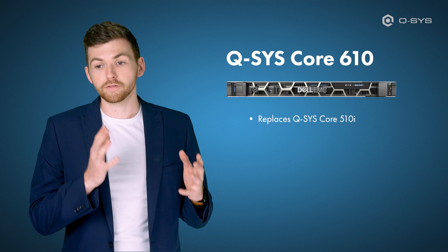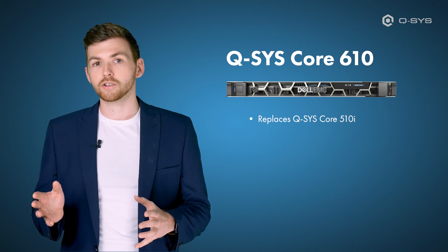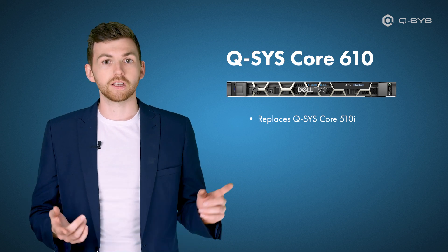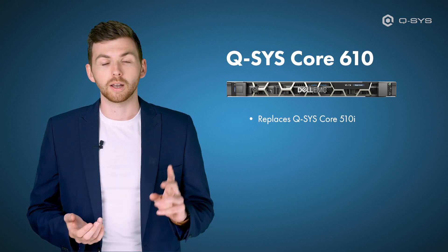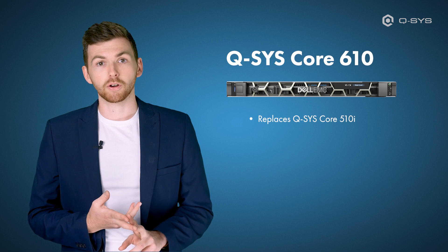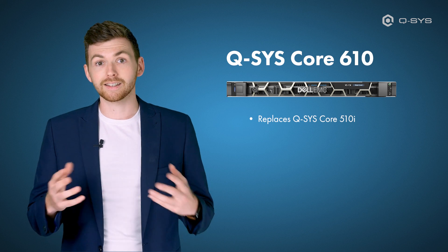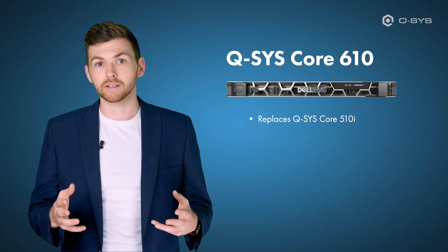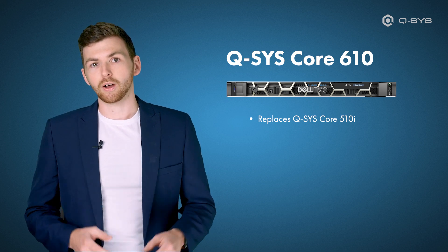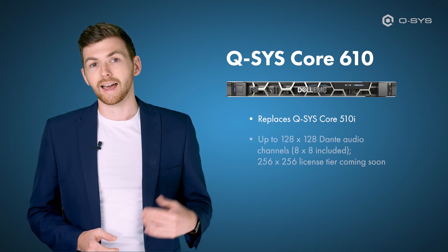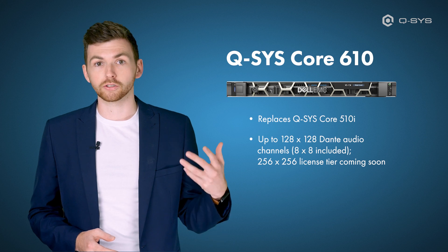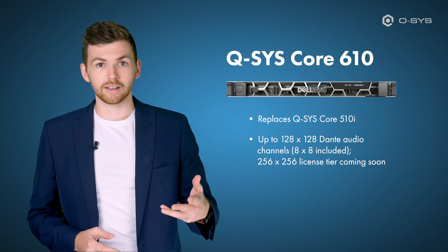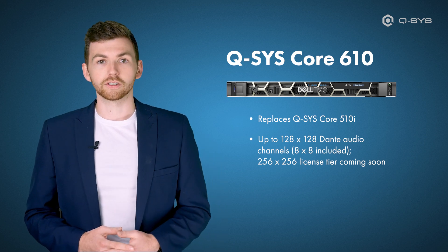You've got very similar specifications in terms of the number of network channels, the number of AEC processors, and the DSP capability, but you now have the ability to add up to 256 channels of software-based Dante on the Core 610.